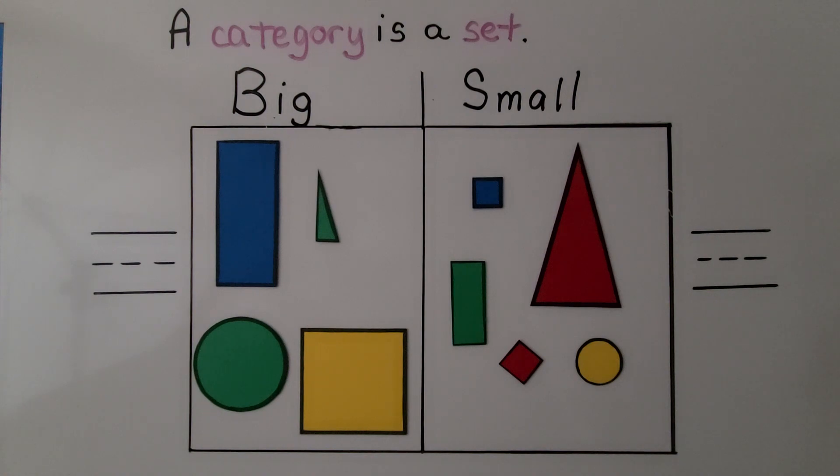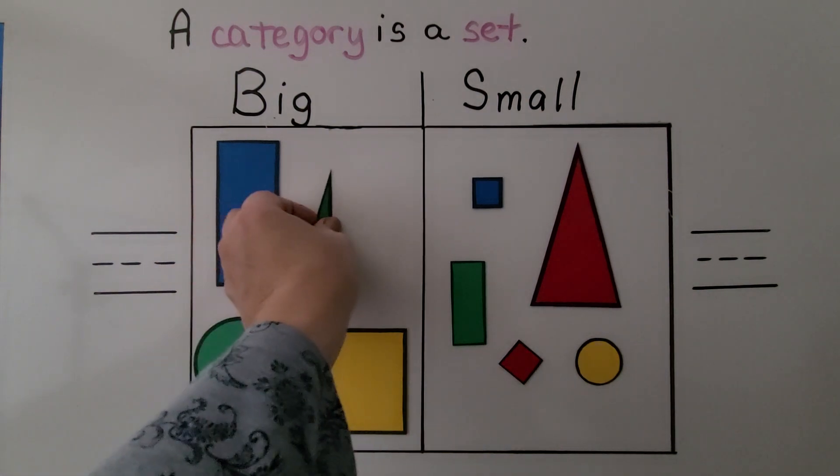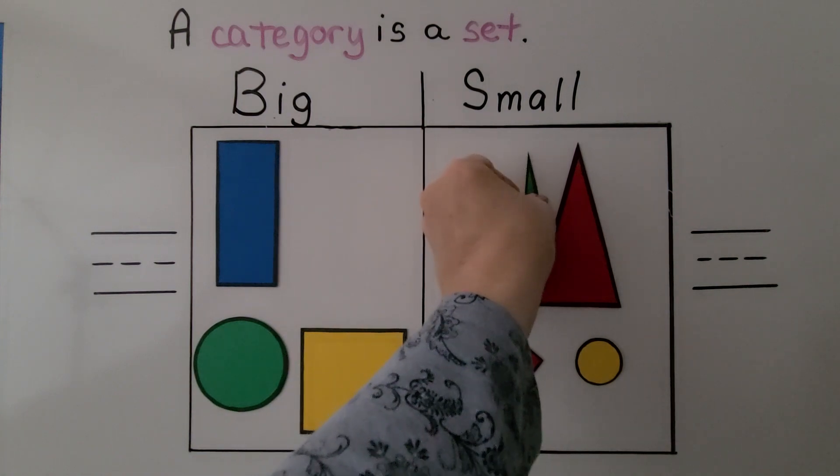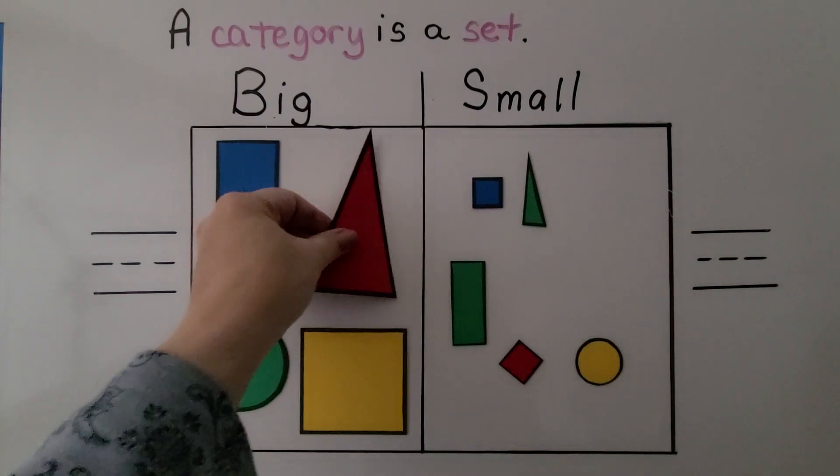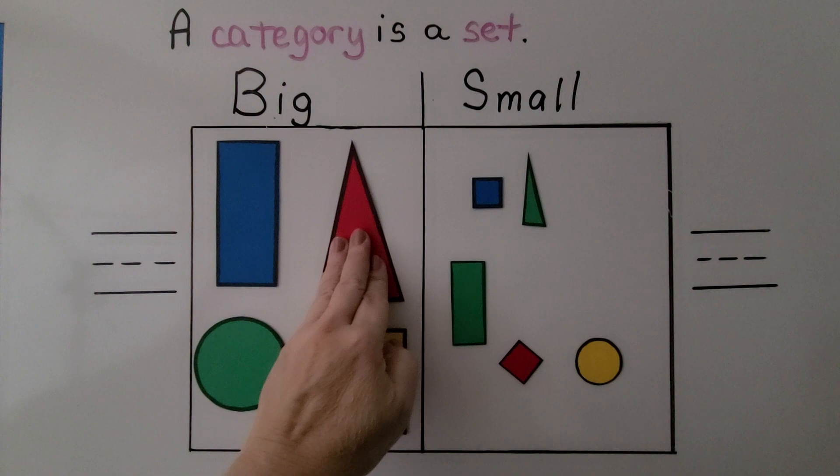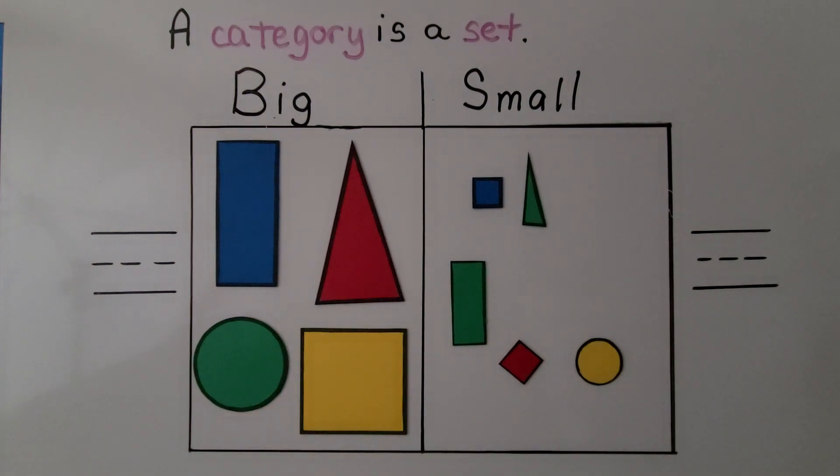And what can we do to fix the mistake? What would you do to fix the mistake? We can switch the triangles to their correct size category. We can move the small triangle to the small side and the big triangle to the big side. And now we've fixed the mistake.